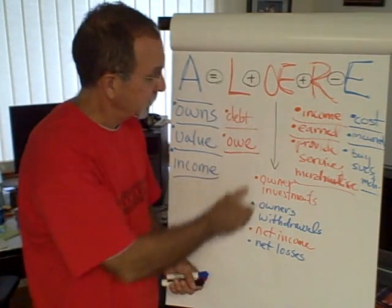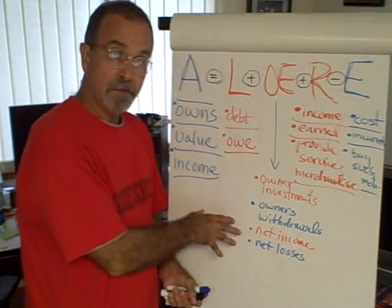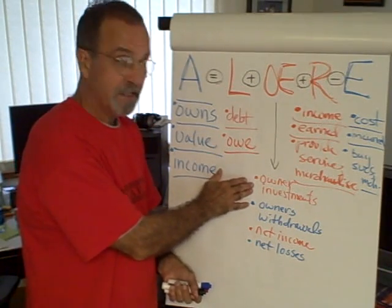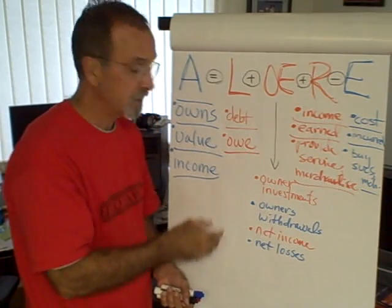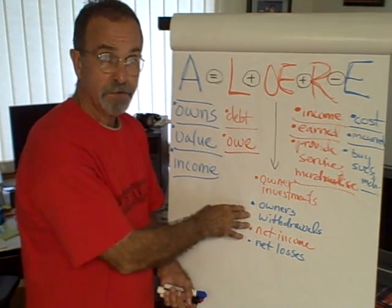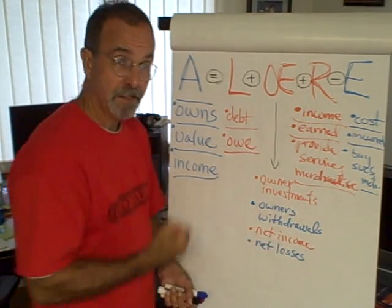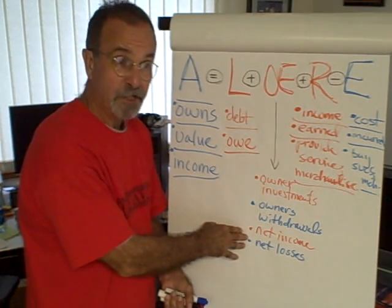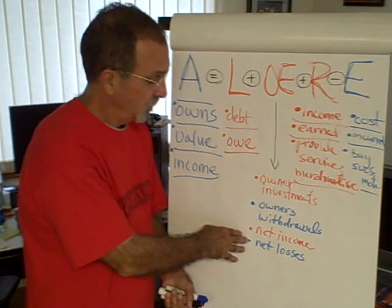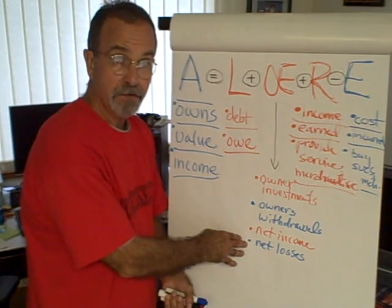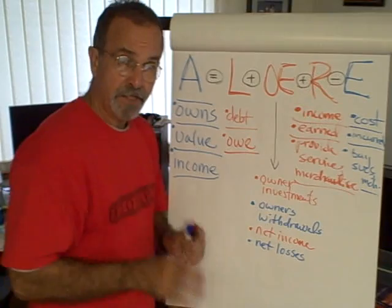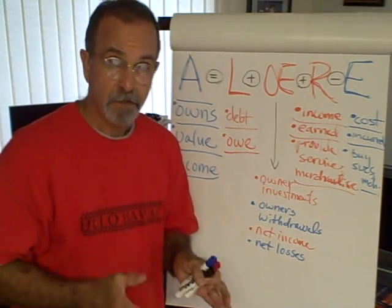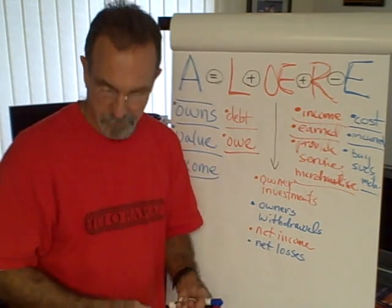Finally, our owner's equity category shows us owner investments — amounts that owners have put into the business over time — owner withdrawals or amounts taken out of the business over time, and the amount of accumulated net income or accumulated net loss over time. And with that, I'm going to terminate this video. I hope this works, and I'll follow up with a continuation of where we're at.